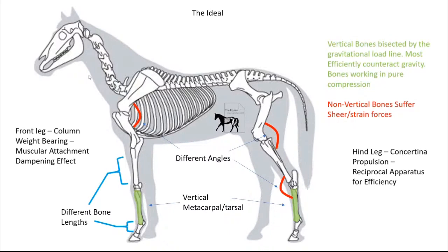When in this vertical orientation, horses are counteracting gravity efficiently and bearing load in pure compression. In my experiential opinion, I have noticed that non-vertical metatarsals are almost always associated with pathology and poor hoof morphology. This applies both from the lateral view and also from the front or back — vertical metatarsals, like a table viewed from the front and back, side to side.